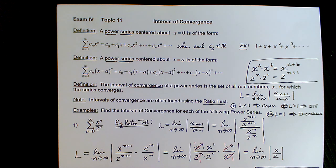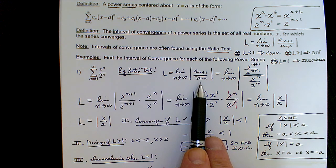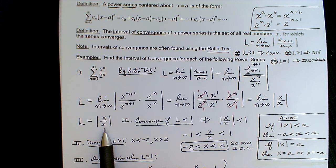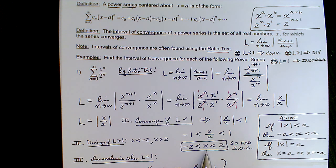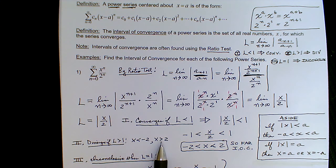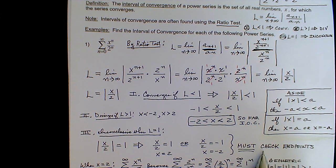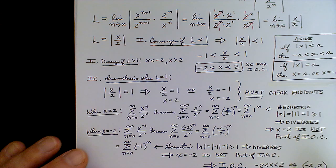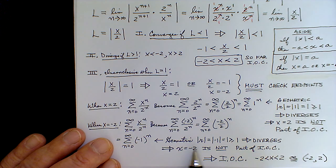We use the ratio test, as we saw in our example, to determine the interval of convergence. We calculate L from the ratio test — the important thing is that absolute values have to stay — and we get an absolute value equation in terms of x. It converges when L is less than one, giving the initial interval, and diverges outside. We must check the endpoints because the test is inconclusive when L equals one. In our first example, the series diverged at both endpoints so they were not included, but if they converge they would be included. Now let's see what happens with our second example.